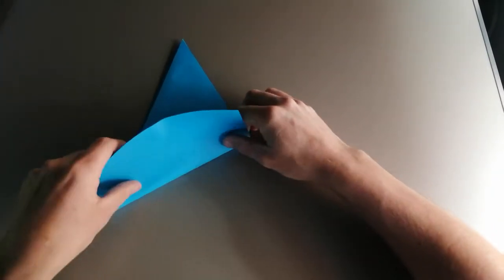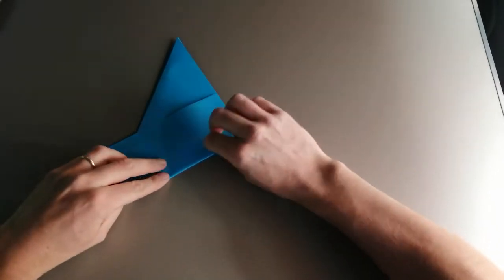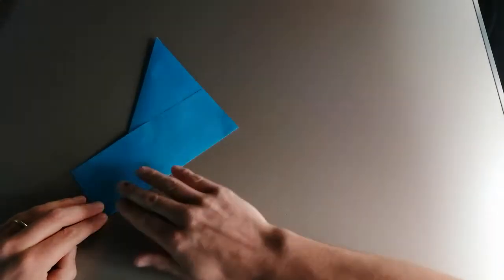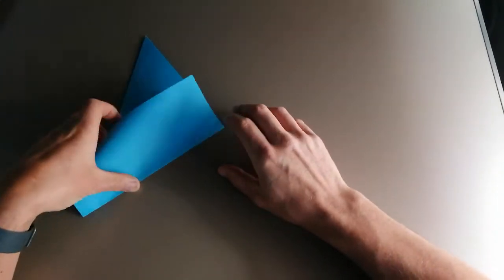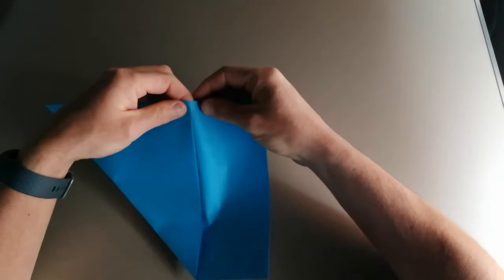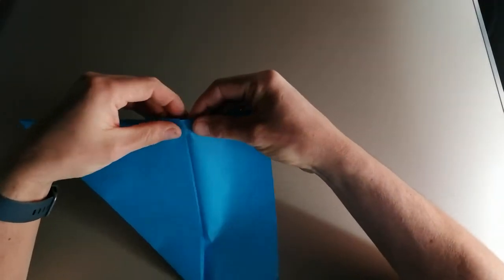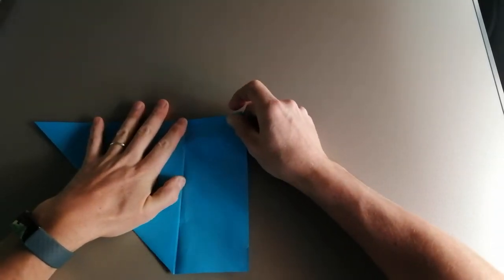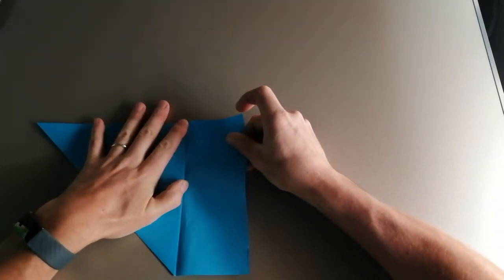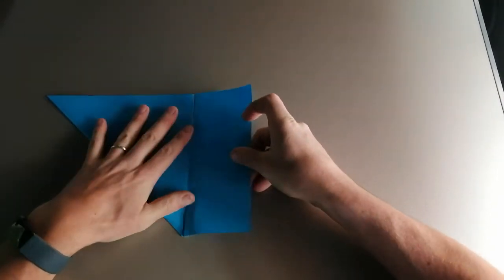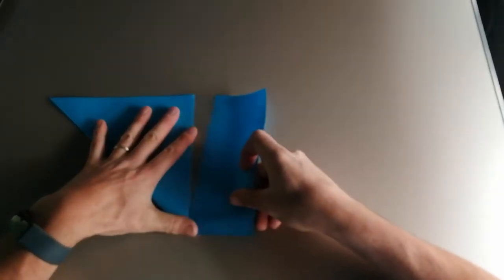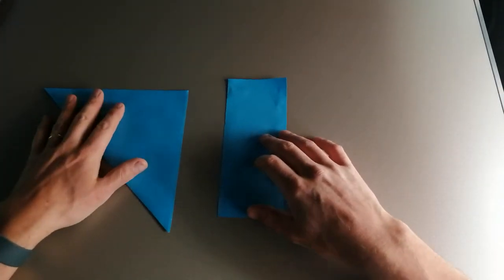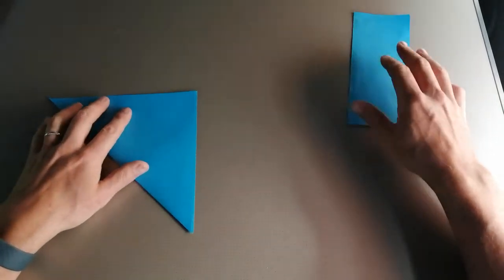I'm going to fold it in the opposite direction now that we have that crease, scoring it to make sure it's a nice and defined crease, and then tearing along the creased line. We can now discard this rectangular piece that we've removed.